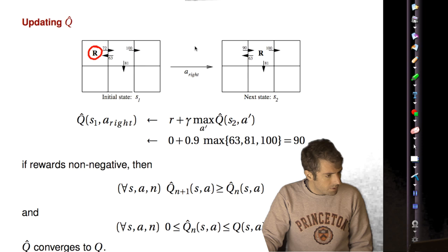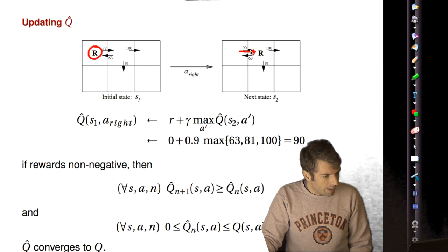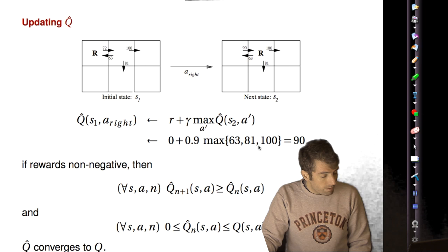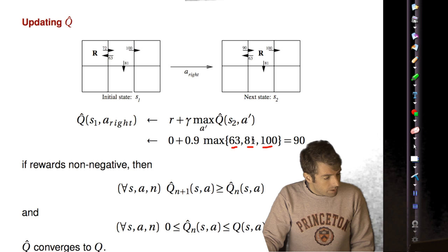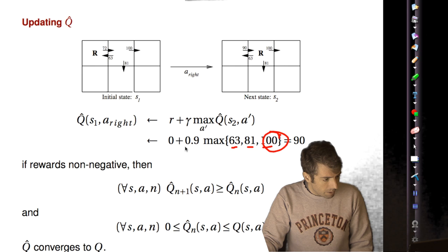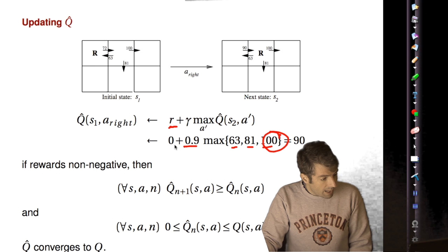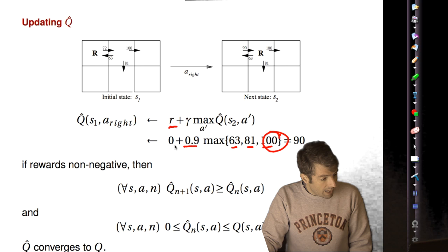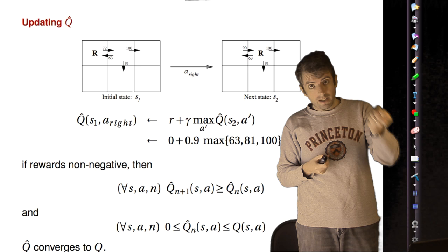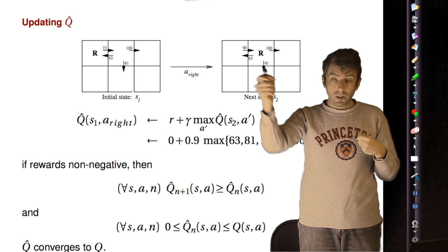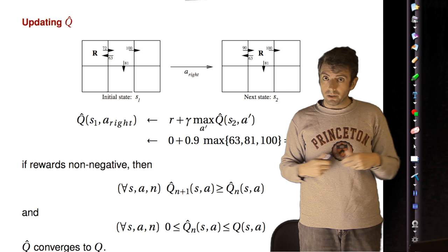So let's see an example of this. You're currently in this state here. You move to the right and you get a zero reward. But the q function for this state that you now landed in has estimates of 63, 81, and 100 for the neighboring states. So you take the max of those and that is 100 and you multiply that by 0.9. You've got zero reward for doing that. And 0.9 times 100 is 90. So now you update the q function for going in state 1 to the right to be 90. If your rewards are all non-negative then over time your q functions will monotonically increase but they will never be larger than the true q function for those states. So by this logic they'll eventually converge to the true q function and you're all set.